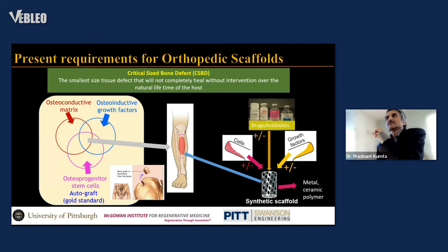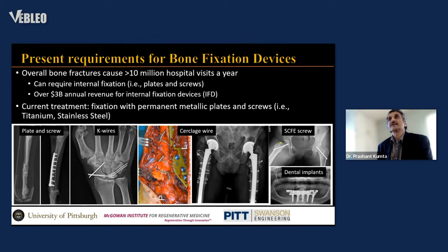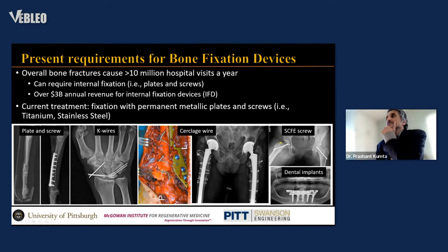Typical bone fixation devices used to address the global market include the plate and screw, K-wires, and circular wires used as fixation devices wrapped around the defect. There is also the slipped capital femoral epiphysis problem, where you have bone plate slippage requiring a screw to connect the bone plate and prevent crossing of the tissue. And of course dental implants — so all of these are typically where bone fixation devices are used.